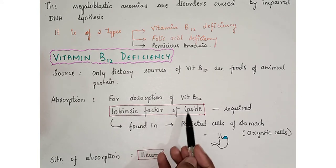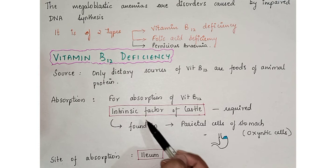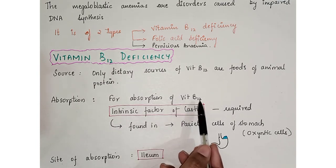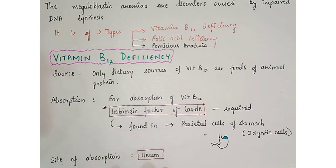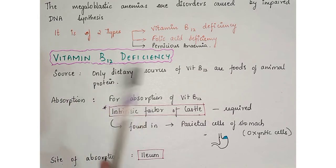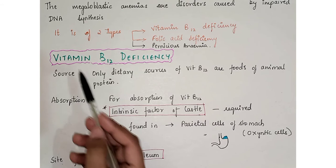The intrinsic factor of Castle is essential for the absorption of Vitamin B12 — this is a very important point. While iron is mainly absorbed in the duodenum, the site of absorption for Vitamin B12 is the ileum. The intestine has parts including the jejunum and ileum, and it is the ileum where Vitamin B12 is primarily absorbed.